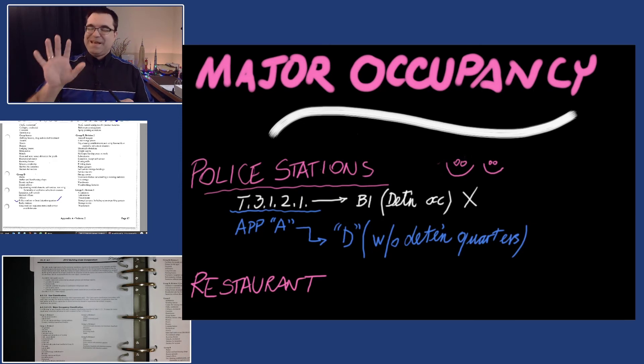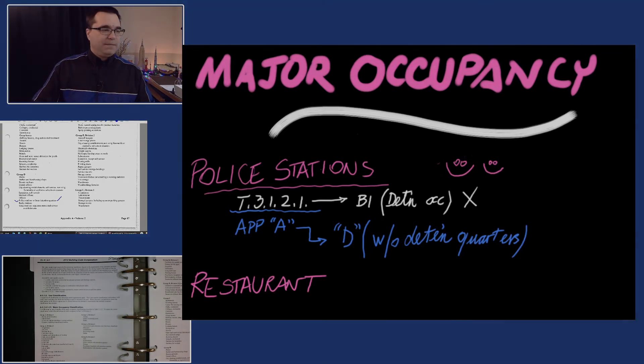Now, again, I recognize I was being sneaky about this, but I'm trying to make a point. Start with Appendix A, not Table 3.1.2.1. Lovely, let's move on to another one.